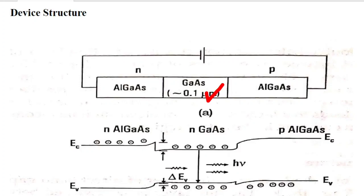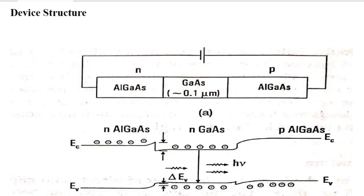The basic structure of DH lasers consists of a thin, narrow layer of GaAs — a direct bandgap material — at the center, with a thickness of around 0.1 micrometers. This thin layer is sandwiched between p-type AlGaAs and n-type AlGaAs. The bandgap of GaAs is around 1.43 eV, while AlGaAs has a wider bandgap just above 1.43 eV, which is directly proportional to the aluminum content — when aluminum increases, the bandgap also increases.